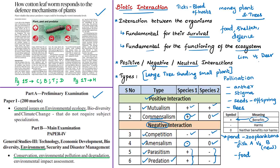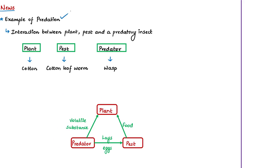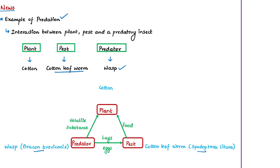Now the news article is about an example of predation — specifically the interaction between a plant pest and a predatory insect. A pest refers to a destructive insect that attacks crops or food or livestock. This article is based on research carried out by researchers from the National Centre for Biological Sciences in Bengaluru. They studied interactions between the cotton leaf worm, which is the pest — scientifically called Spodoptera litura — and the predator insect which is the wasp Bracon brevicornis.